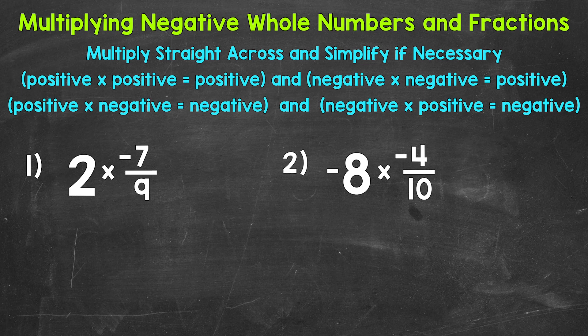Multiplying negative whole numbers and fractions is the same process as multiplying positive whole numbers and fractions. We multiply straight across. The only difference is we need to make sure we have the correct sign for our product. The rules for multiplying positive and negative integers apply to fractions as well.